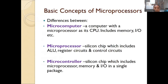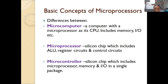Before getting into the topic, we need to know the difference between the microcomputer, microprocessor, and the microcontroller. A microcomputer is a computer with a microprocessor as its CPU, including memory, I/O, etc. A microprocessor is a silicon chip which includes arithmetic logic units, registers, circuits, and control units. A microcontroller is again a silicon chip but which includes the microprocessor, memory, and I/O in a single package. In a microprocessor, only the arithmetic logic units and register circuits are present, but in a microcontroller everything is present inside a single chip.